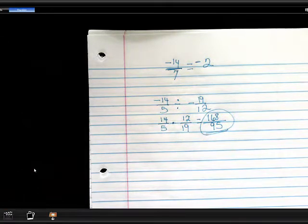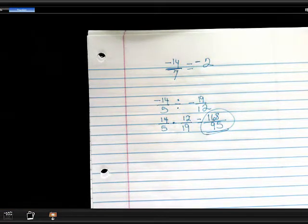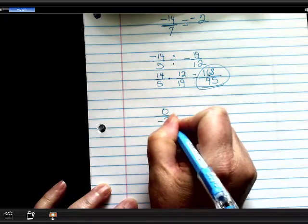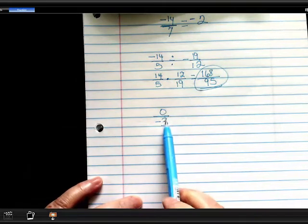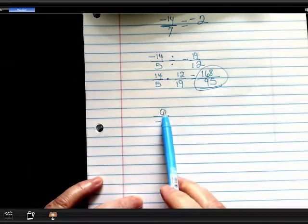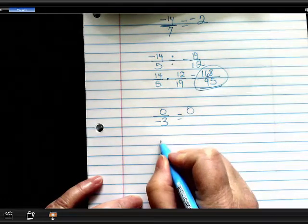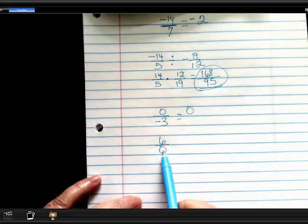And that is dividing and multiplying integers. There is one more thing that we need to talk about with fractions and dividing. Whenever you divide fractions, let's talk about this. This says I have 0 pieces out of negative 3, which means I have 0. But what if I had 6 over 0? This says I have 6 pieces out of nothing.